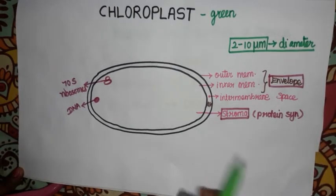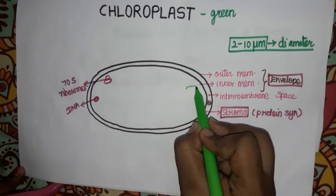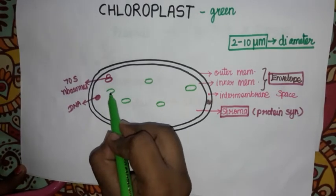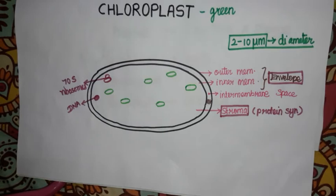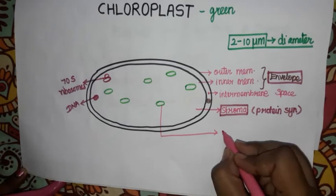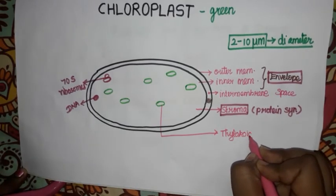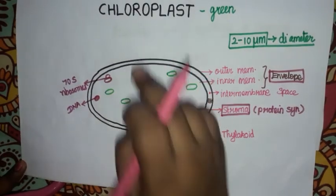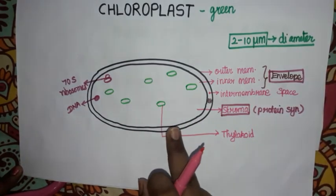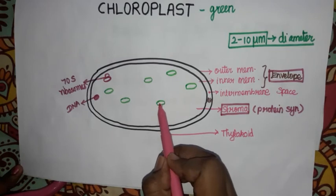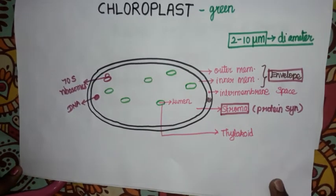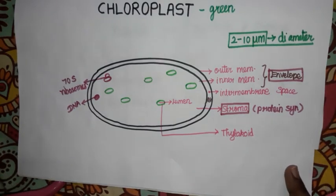The next important structure is the thylakoid. The thylakoid is a circle shape in green color inside the chloroplast. The speciality of the thylakoid is that it contains photosynthetic pigments, which includes chlorophyll — one of the important pigments. The layer on top is the thylakoid lumen, and the thylakoids contain all photosynthetic pigments.